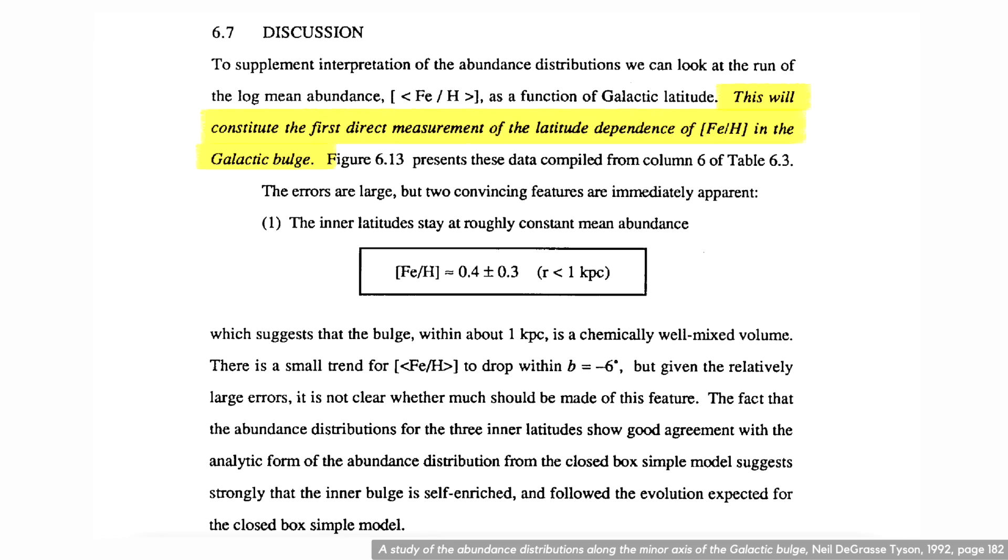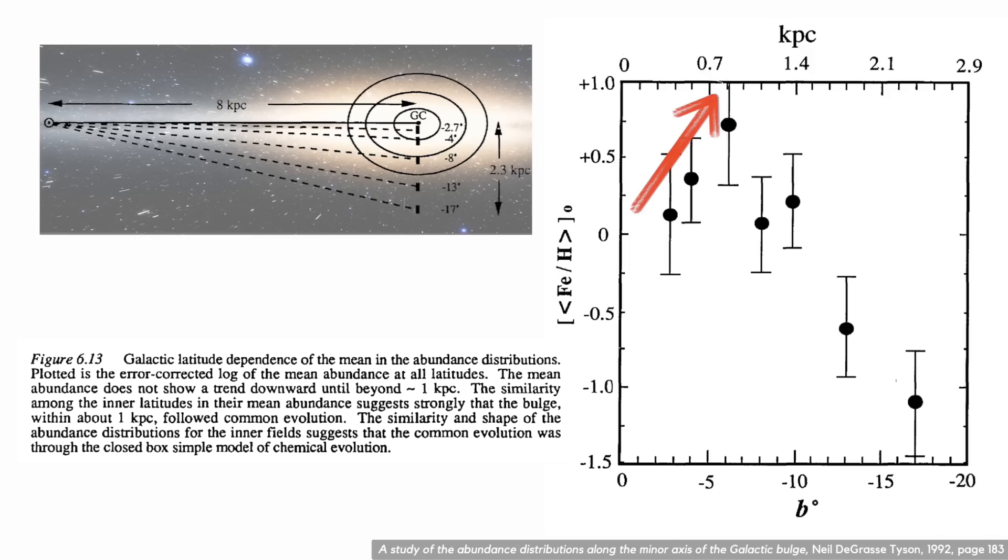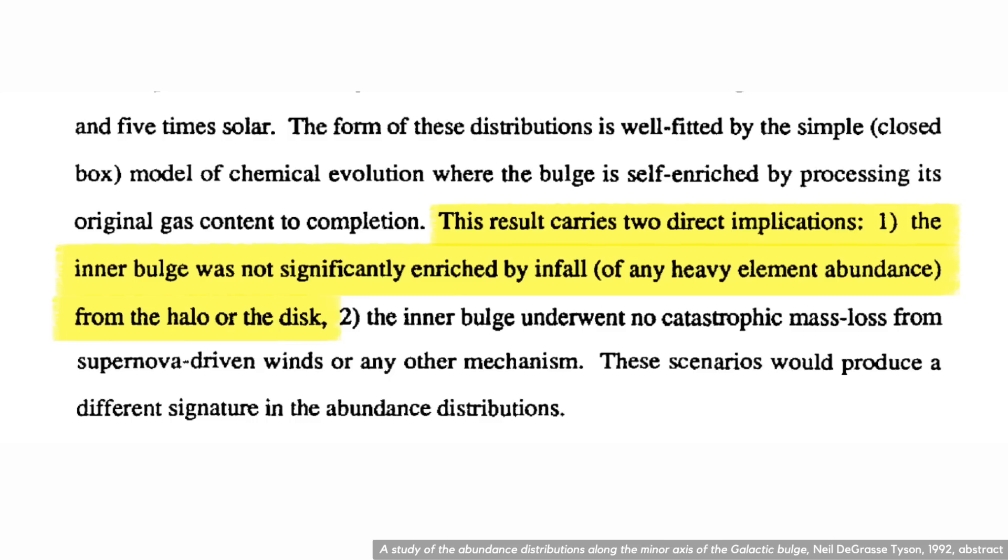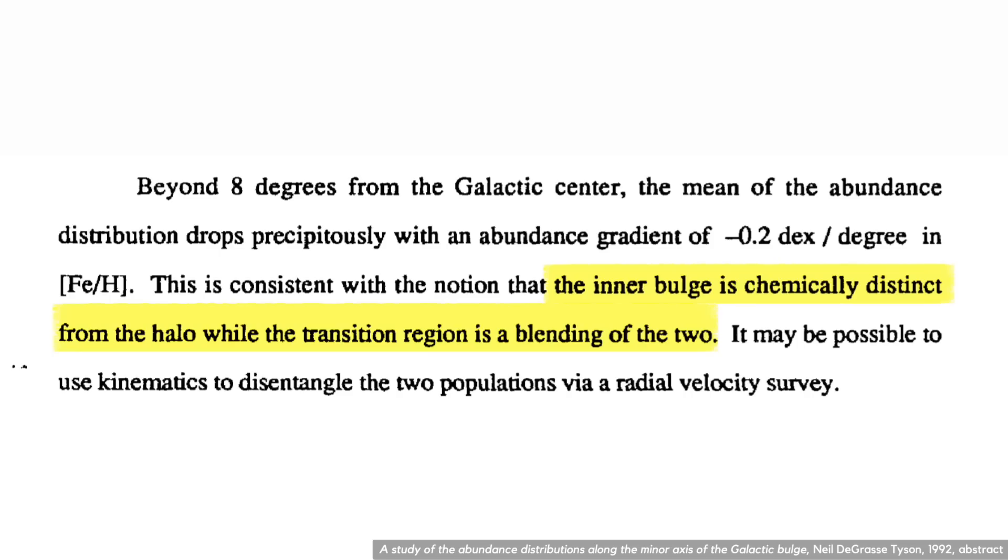Tyson's measurements constitute the first direct measurement of the galactic latitude dependence of iron to hydrogen in the galactic bulge. He shows that it initially increases away from the galactic center then steeply drops off as you leave the bulge. This drop off occurs around one kiloparsec away from the center, leading him to conclude that those stars within one kiloparsec followed a common evolution. He also concludes that the inner bulge was not significantly enriched by infall of gas and that the inner bulge underwent no catastrophic mass loss from supernova driven winds. He finds that the inner bulge is chemically distinct from the halo, while the transition region is a blending of the two.